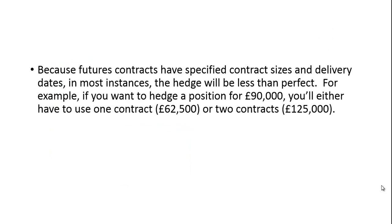Because futures contracts have specified contract sizes and delivery dates, in most instances the hedge will be less than perfect. For example, if you want to hedge a position for 90,000 pounds, you'll either have to use one contract (62,500 pounds) or two contracts (125,000 pounds) — right in the middle, so you pick whichever is closest. Also, the delivery date may differ from when you're closing out your position, so you'll have to pick the closest delivery date, usually one expiring after you close out your position.